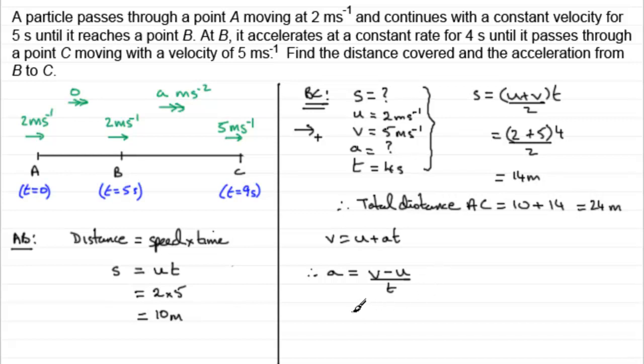But if we put our values in, we've got V, the final velocity, 5, minus the initial velocity, which was the 2 here, and then divided by the time taken to go from 2 to 5, which was 4 seconds. So therefore you've got 3 divided by 4, 3 quarters, or as a decimal, 0.75 meters per second per second. And there you have it.